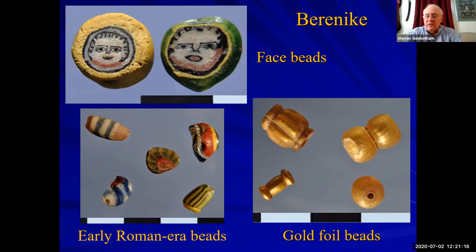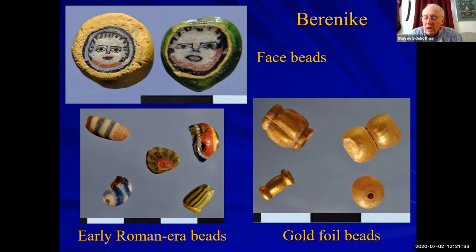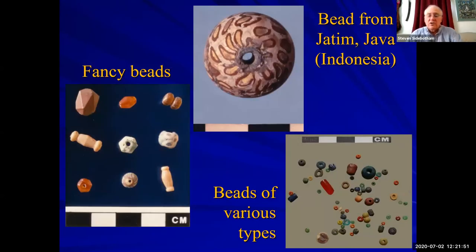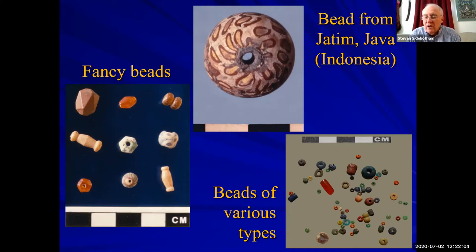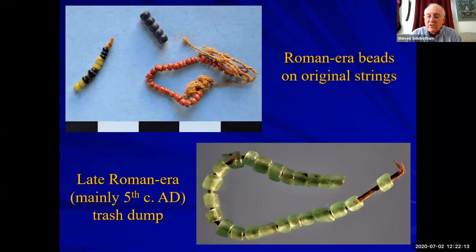We found thousands of beads. We find large numbers of beads from the subcontinent and also from Sri Lanka, especially in the late period — the fourth, fifth, and sixth centuries. Many of these are Mediterranean made or Egyptian made, or from elsewhere in the Near East, or as I've indicated, from the subcontinent. There's a very interesting latest bead from Jatim on Eastern Java in Indonesia — the one artifact we have that comes from further east than the subcontinent. The preservation is excellent, so we actually have some of the original strings on which the beads were put.